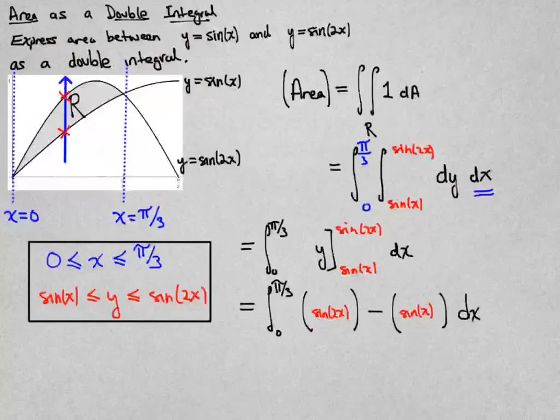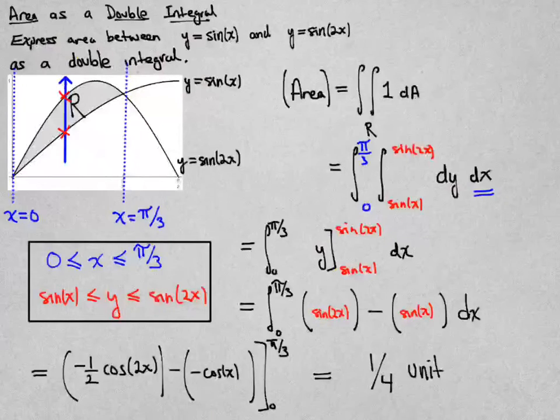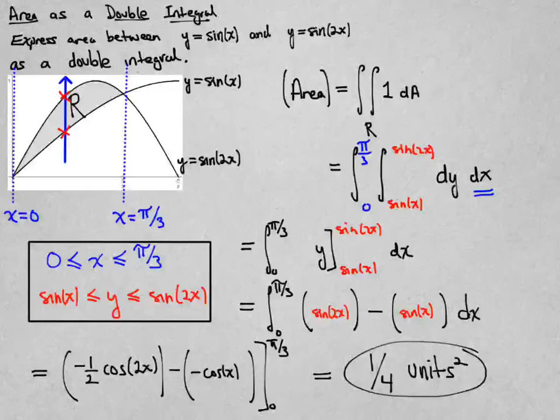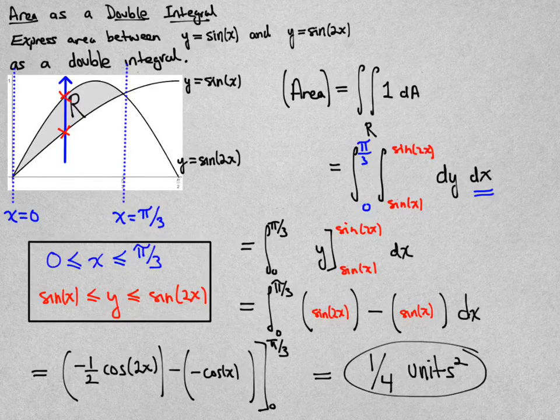And then I need to integrate each one of those and evaluate between 0 and π/3. If you integrate sin(2x) you get -1/2·cos(2x), and the integral of sin(x) is of course -cos(x). I'll let you calculate those, but it turns out that if you plug in π/3 you'll get 1/4, and that one-fourth represents the area of that shaded region.